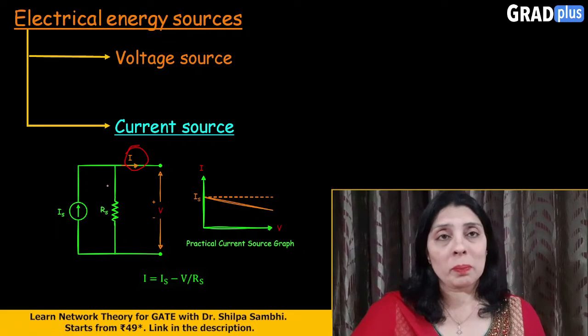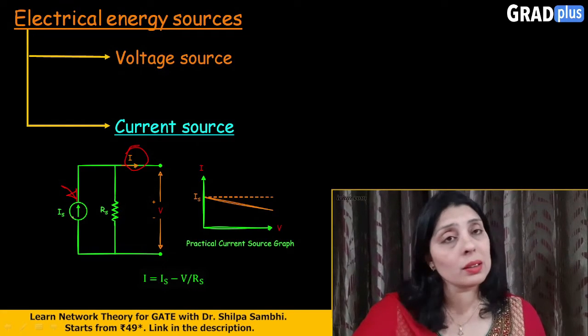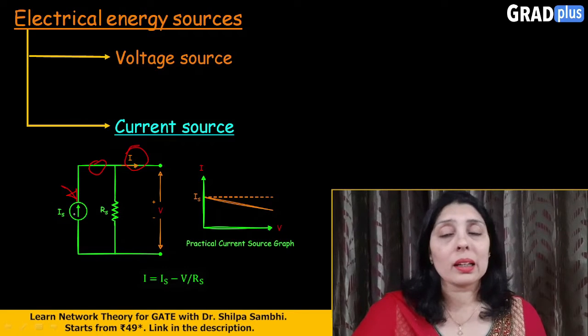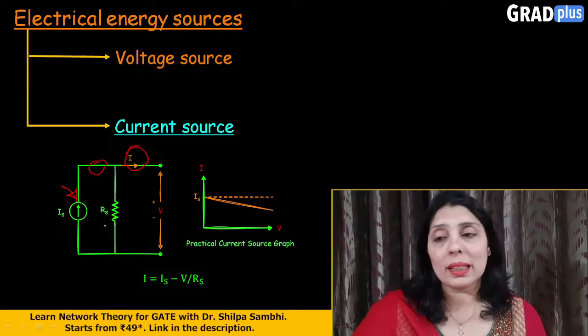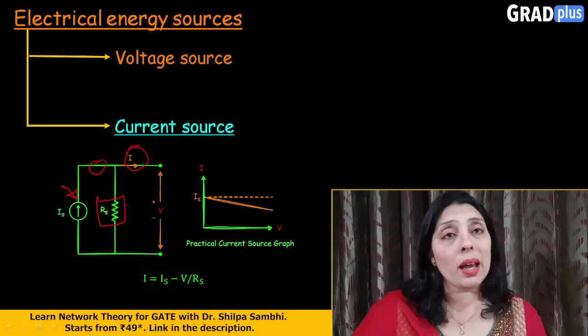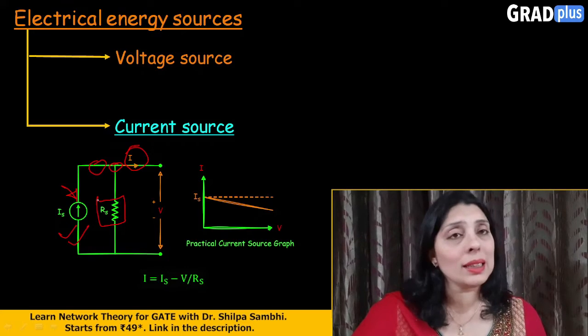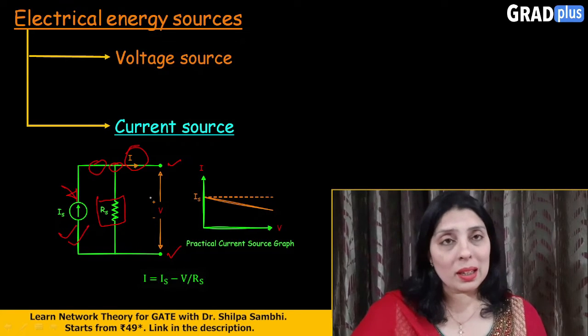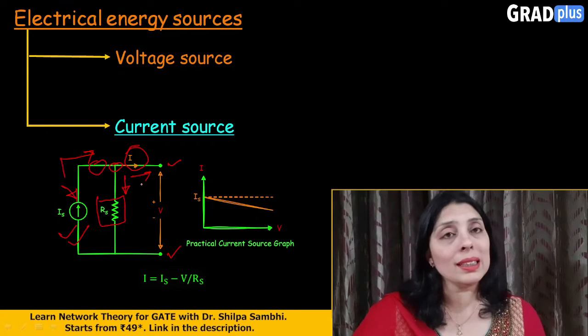Now, here what will happen practically? There would be some resistance which will be offered by the components which are used for the construction of this current source and naturally the resistance which is there in the conducting wires. So, together, collectively, this resistance will be represented as a parallel resistance Rs parallel to the current source. Now, if you apply Kirchhoff's current law at this terminal and you say that the terminal voltage here is V, then applying Kirchhoff's voltage law, what you will get? This entire total current is now split in two parts. One which is going in this branch, the other which is going as I.